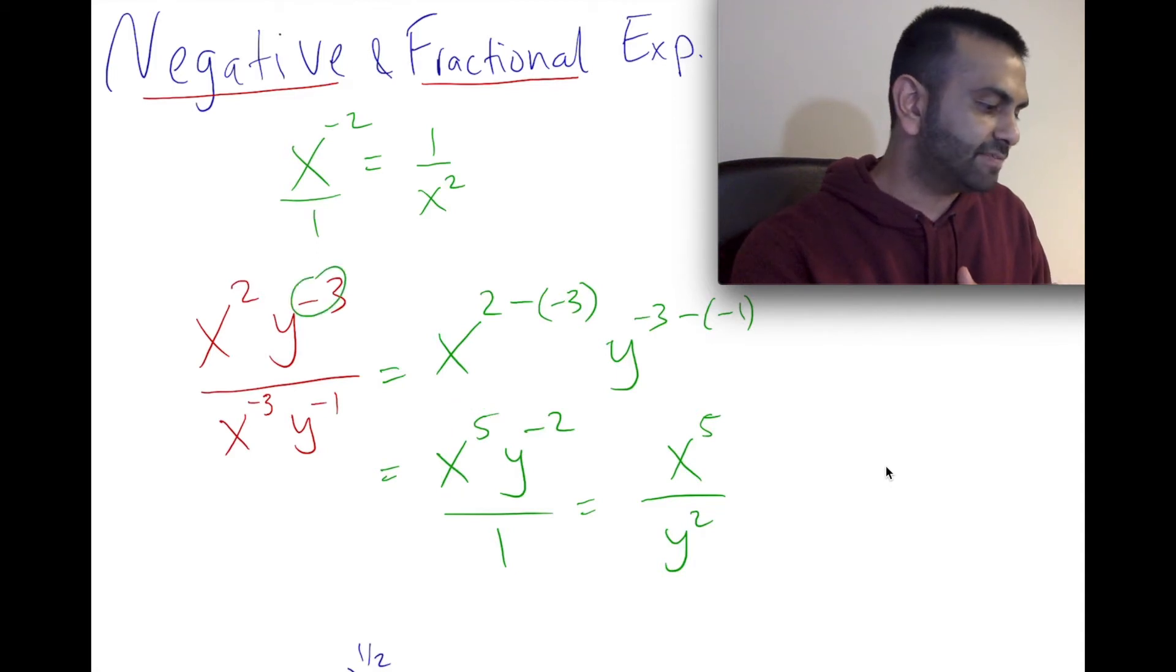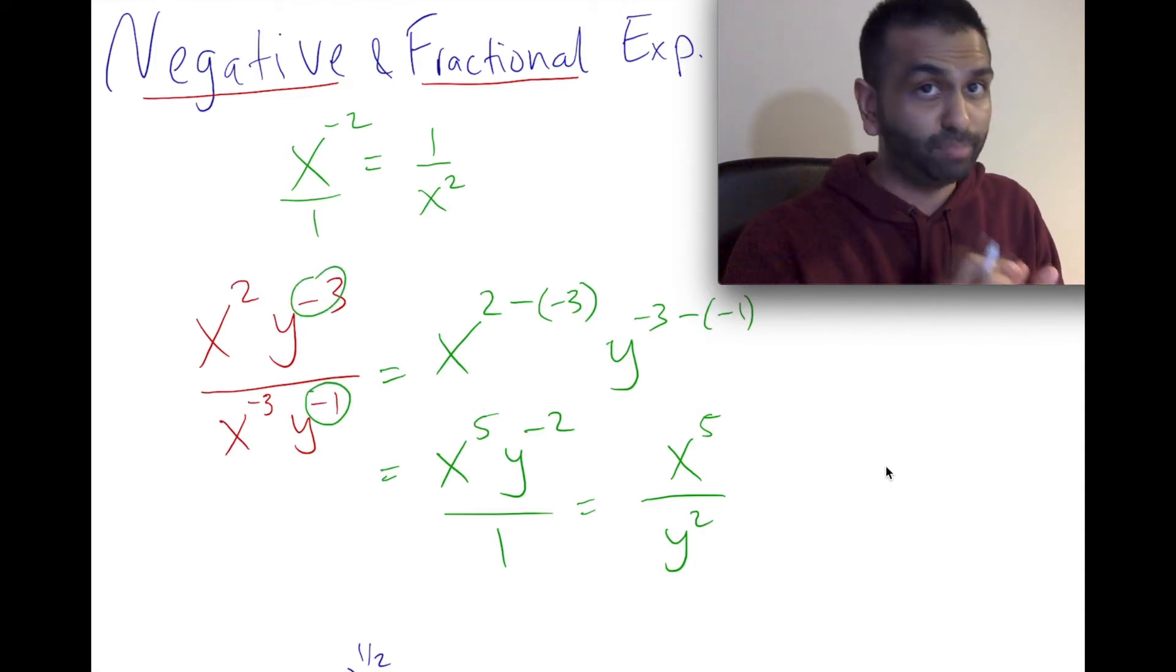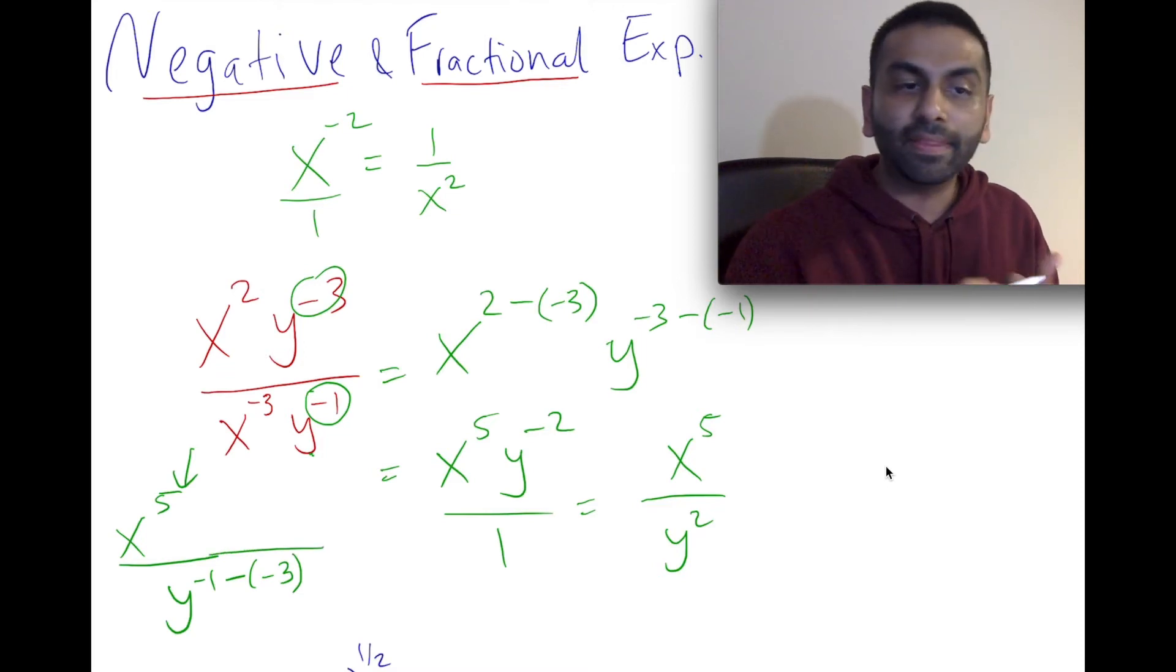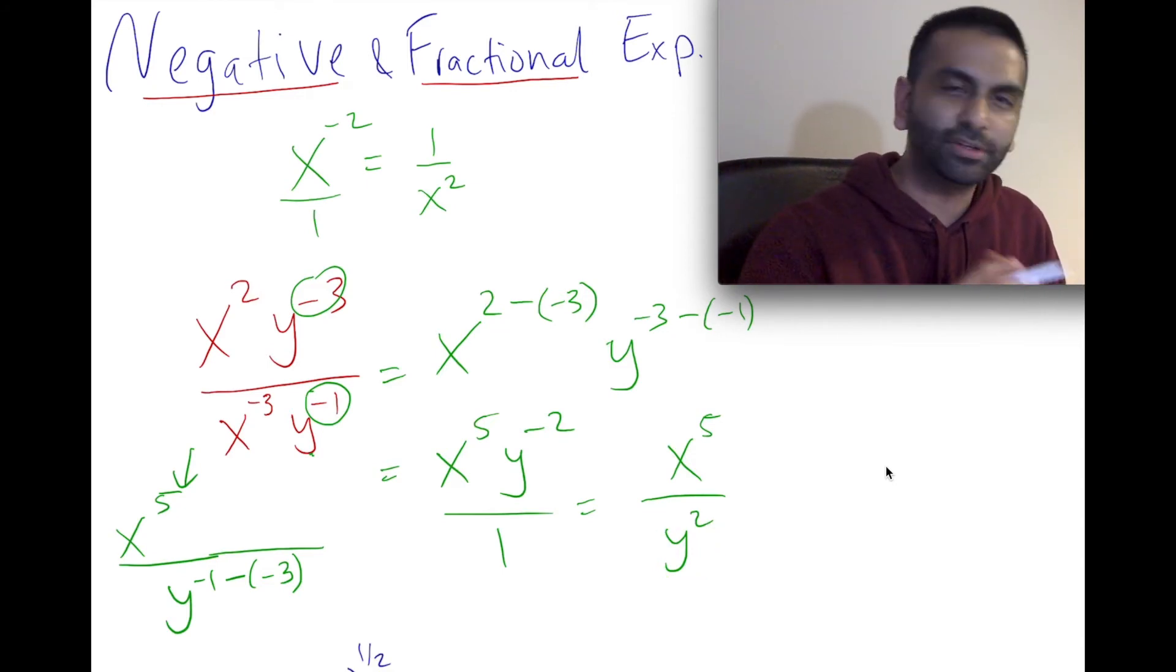But here, you could have said, out of these two, looking at the y, the negative 1 is bigger. So I could anchor the y in the denominator and say alternatively, the x would have been x to the fifth. But on the bottom, you could have said y to the negative 1 minus that top of negative 3. And then you would have gotten y, this would then be positive 2. And that would have been y squared, but it's on the bottom. It's the same thing.